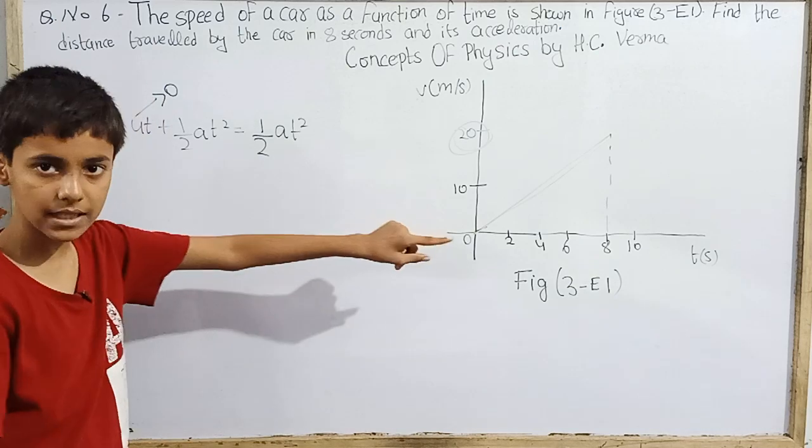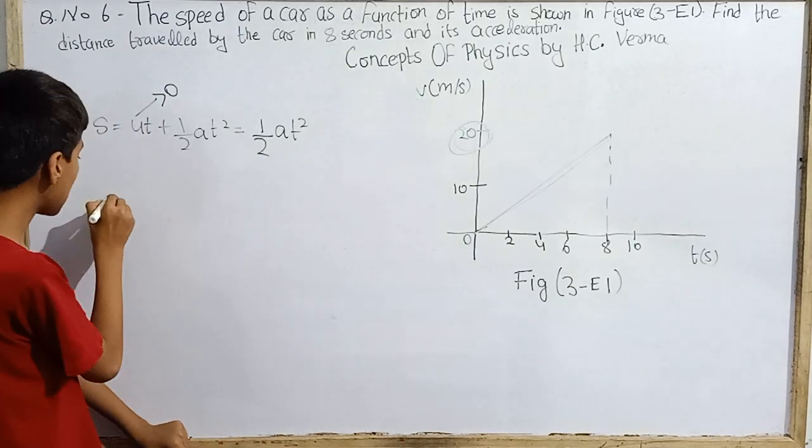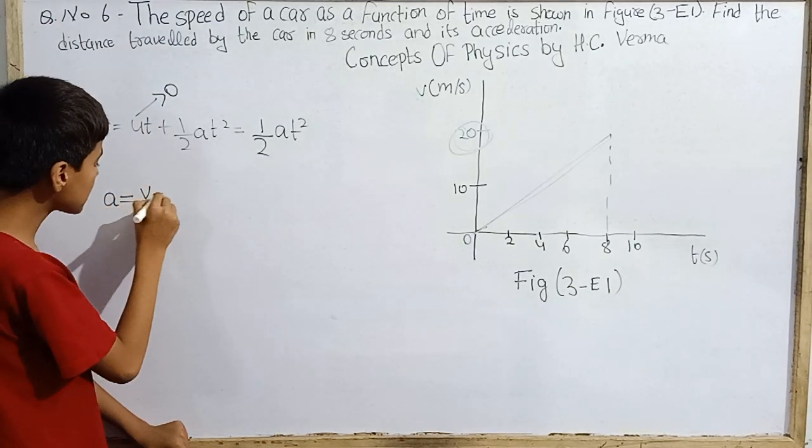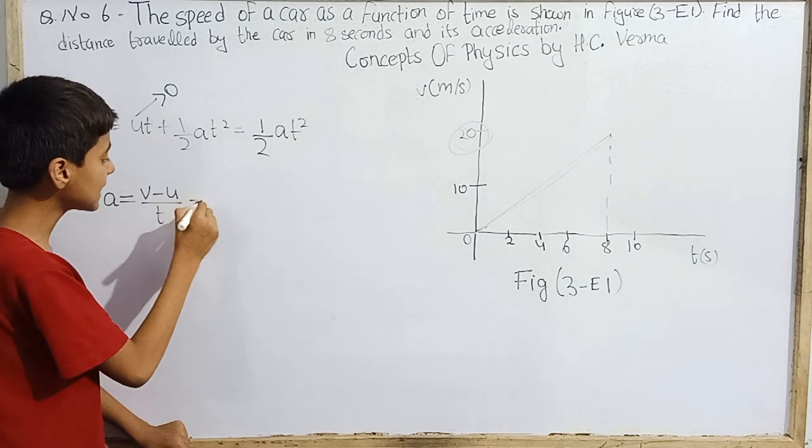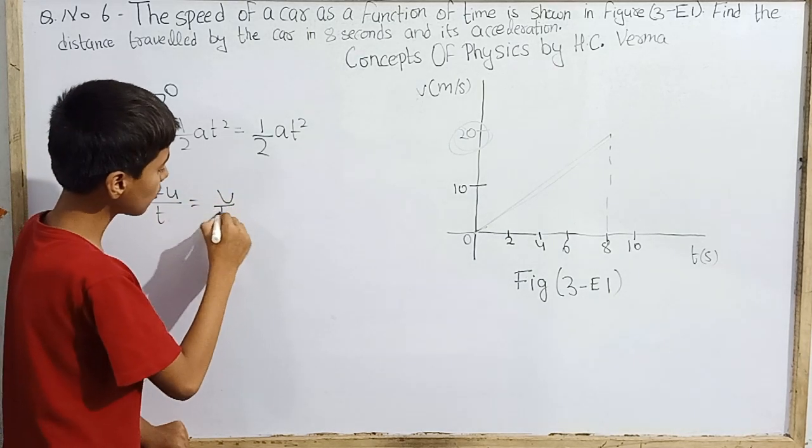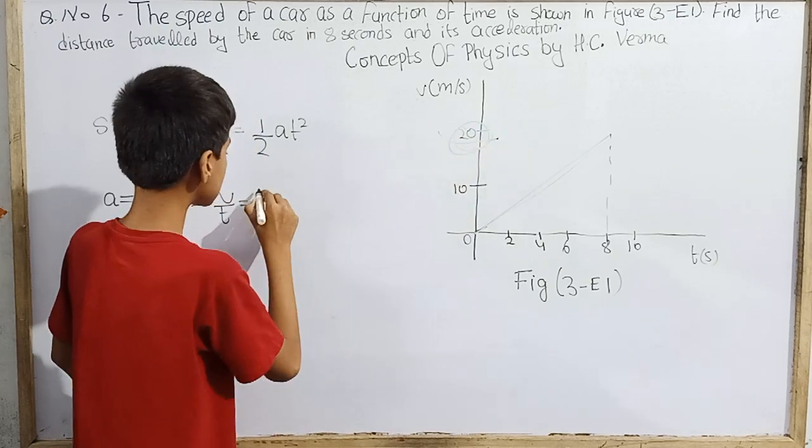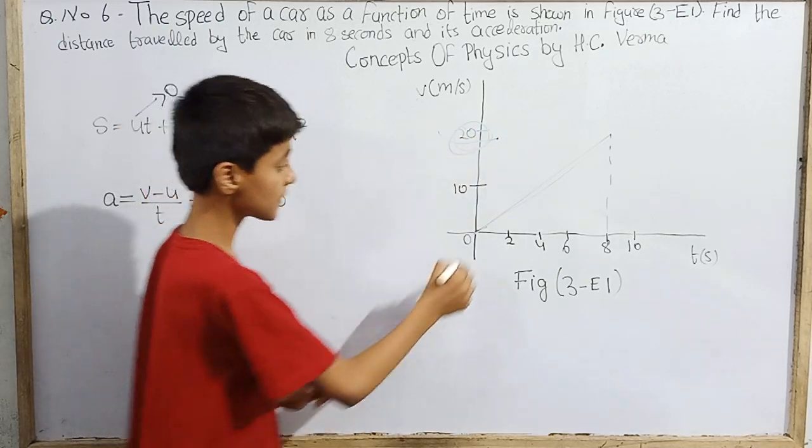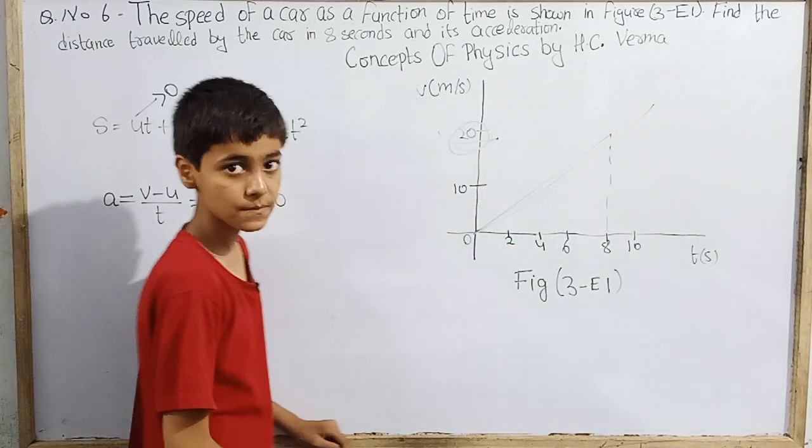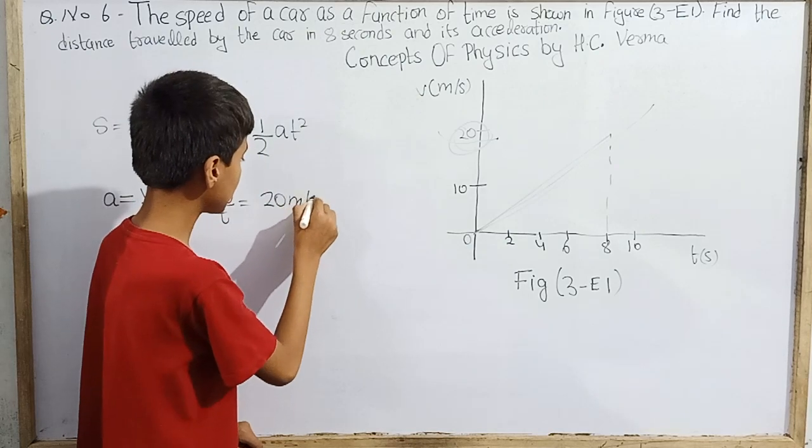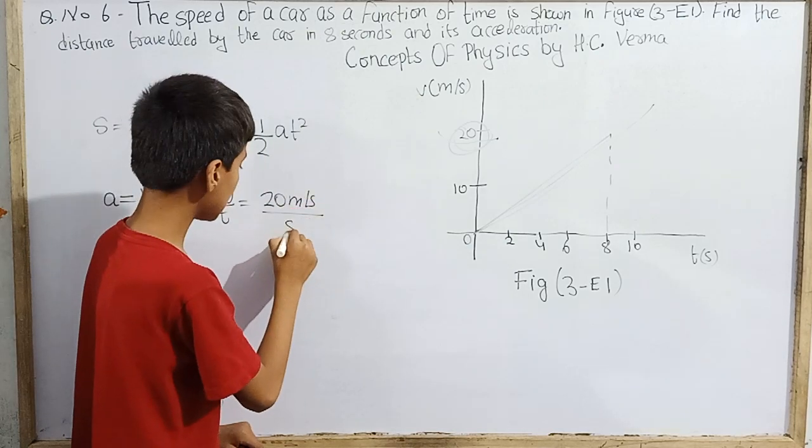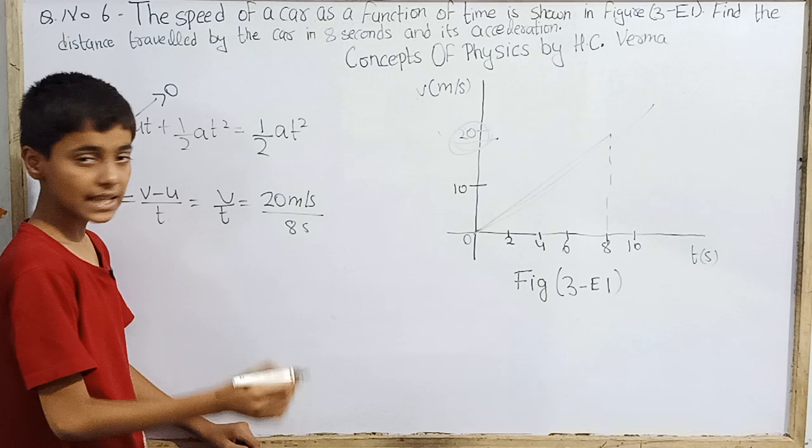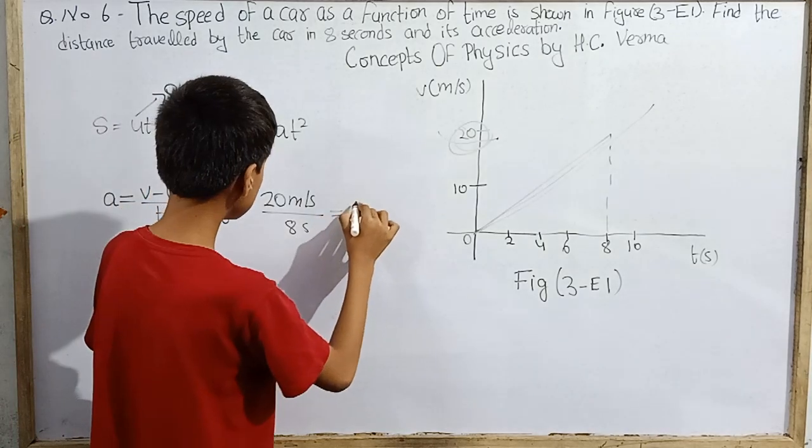I don't know acceleration, so I want the acceleration as v minus u over t. I know u is 0, so again v over t. Finally, 20 meter per second divided by 8 seconds.